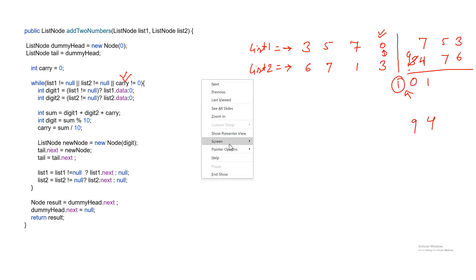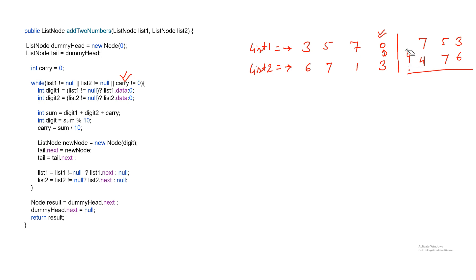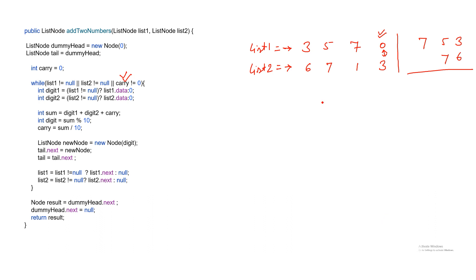The digit value is determined as follows: if list 1 is not pointing to null, take the data from list 1, otherwise take 0. Same for list 2 — if list 2 is not pointing to null, take the data from list 2, otherwise take 0. This handles the case where one list runs out of nodes before the other.